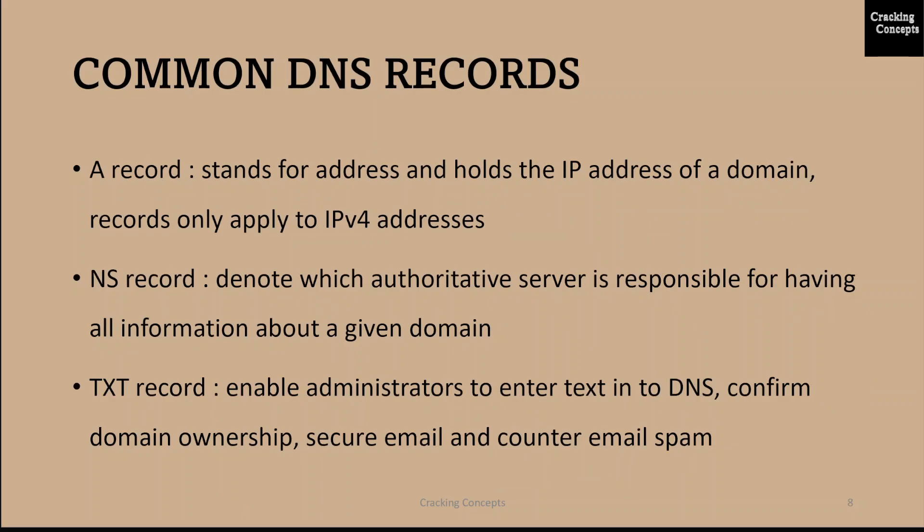Now let us look into the common DNS records. A DNS record is information a query seeks, depending upon the query, client or application, which will require different information. The first type is called an A record. This stands for address and holds the IP address of a domain. These records only apply to IPv4 addresses. Most websites have only one A record but some larger sites have several, which helps with load balancing by serving different A records to different users in heavy traffic.